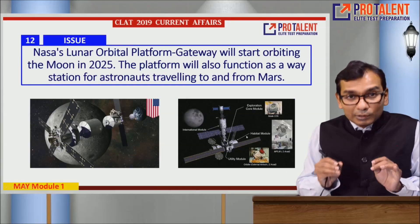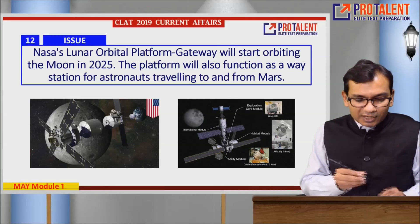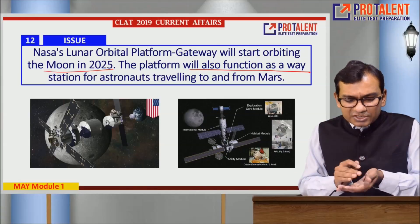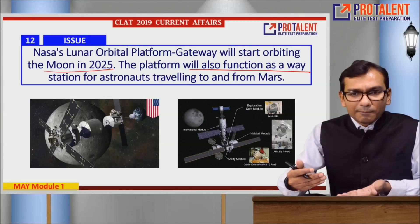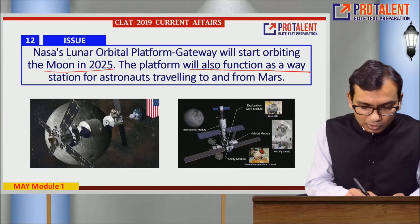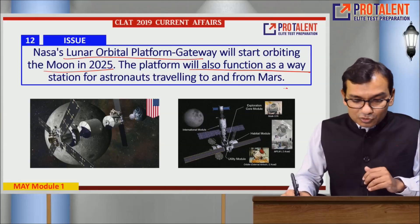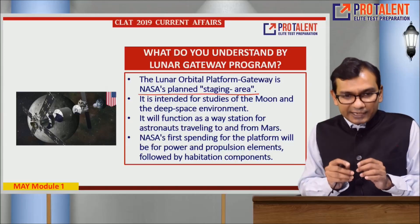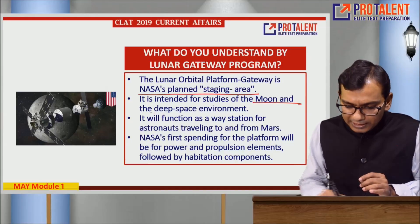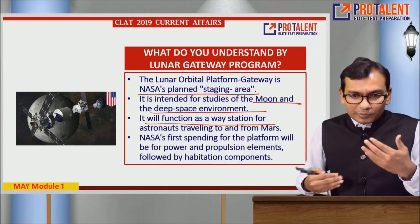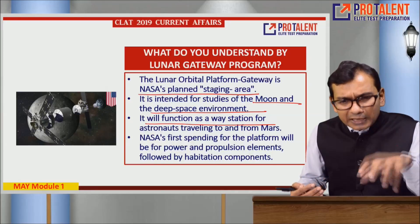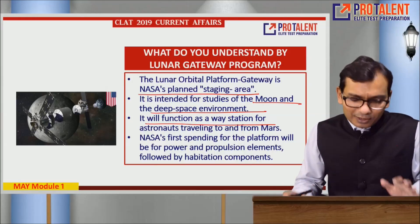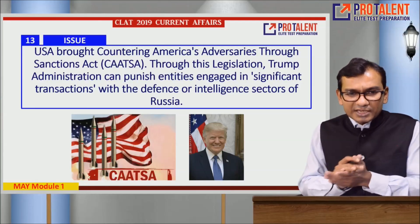Point twelve: NASA's Lunar Orbital Platform-Gateway will start orbiting the moon in 2025. The platform will also function as a way station for astronauts traveling to and from Mars. It is NASA's planned staging area intended for studies of the moon and deep space environment, providing power, propulsion elements, and hibernation components for missions heading toward Mars.